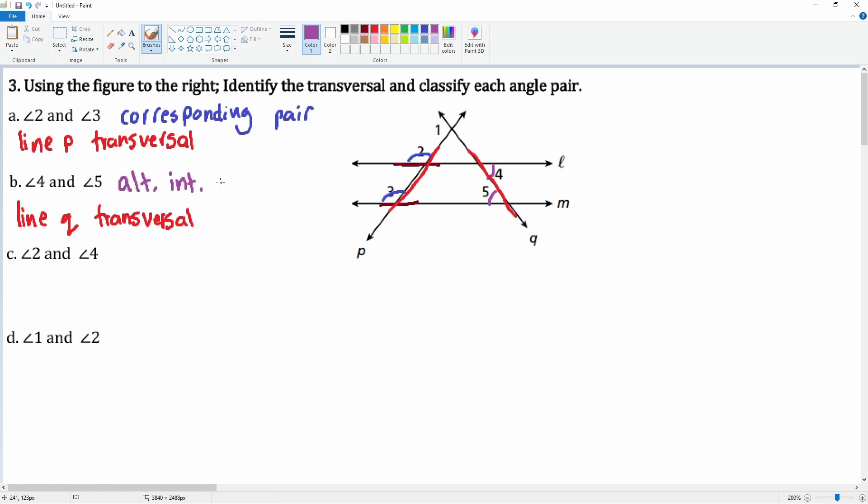Number C, two and four. So two and four—well, that's only possible if this is the transversal, so line l would be the transversal there. And that looks like they are on the outside and alternating, so we can say this is an alternate exterior angle pair.